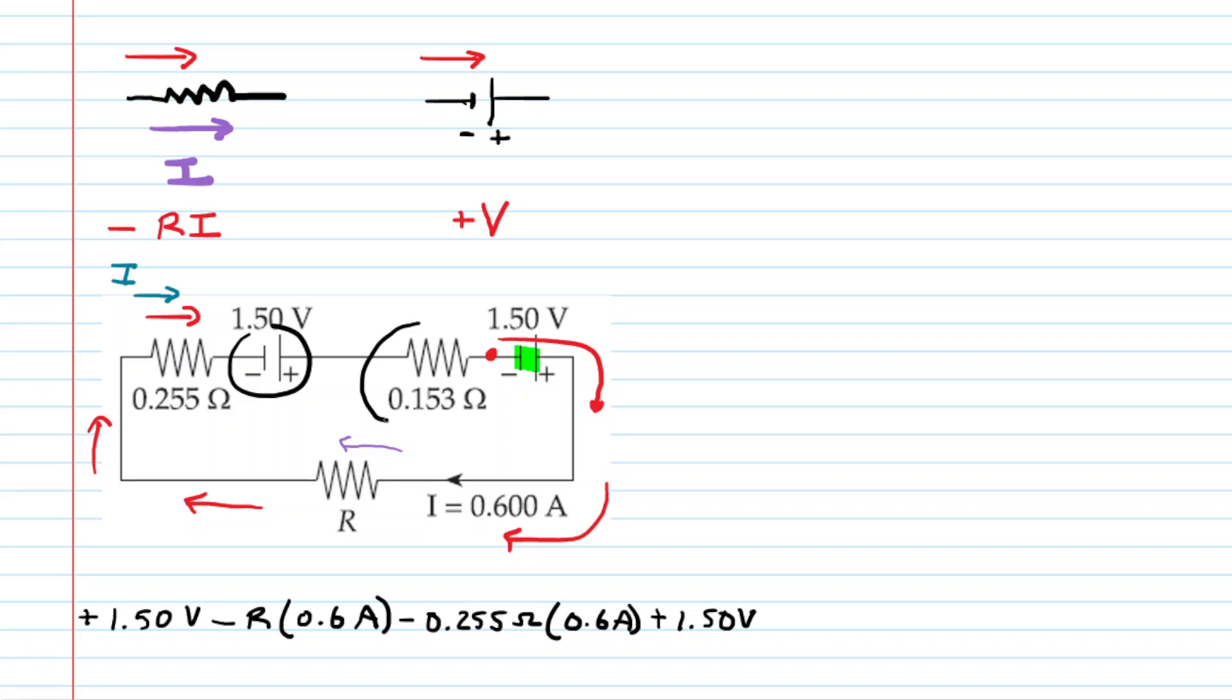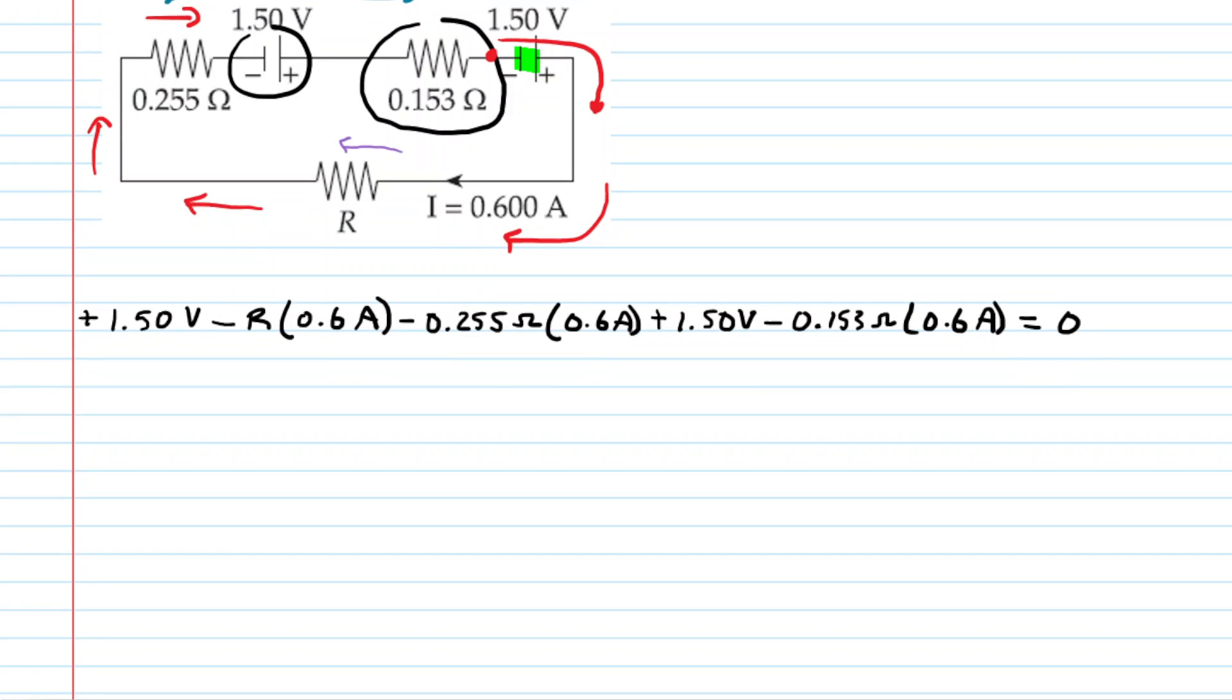And then finally, we encounter this final internal resistance. The current is still traveling to the right. We are still traveling to the right, so we have a negative potential change. It'll be 0.153 ohms multiplied by the current of 0.6 amps. We have returned to the red dot, our starting point, and therefore the loop rule states we can set these potential differences equal to zero. Very good.